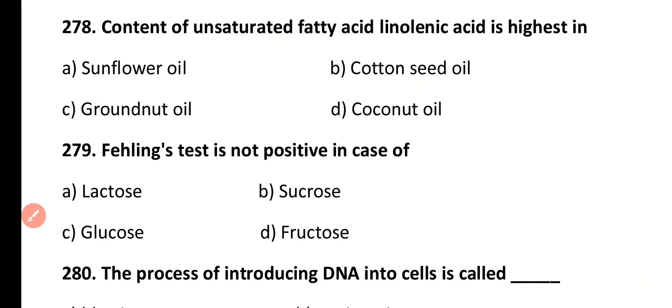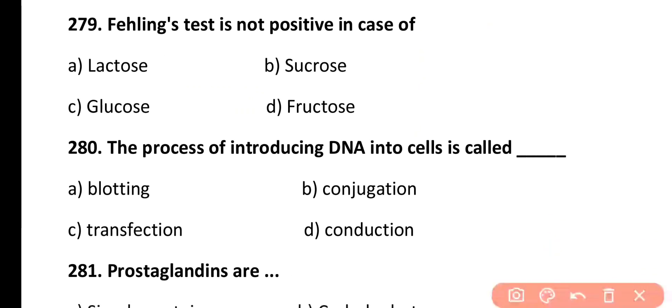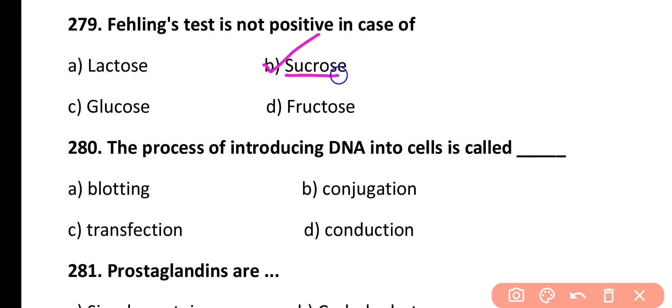Question 279. Fehling's test is not positive in the case of: lactose, sucrose, glucose, or fructose. Correct answer is Option B. Sucrose is a non-reducing sugar with no free aldehyde group, which is why it is not positive in the Fehling's test.